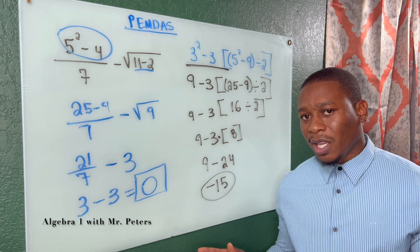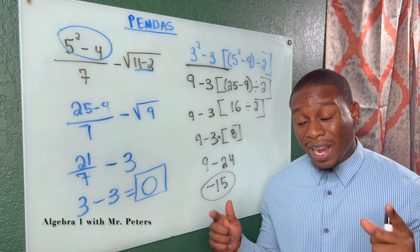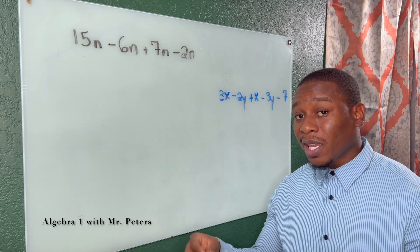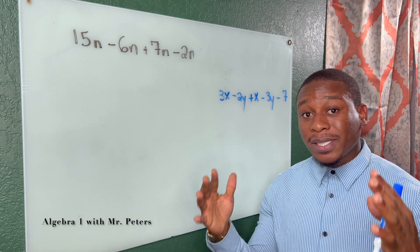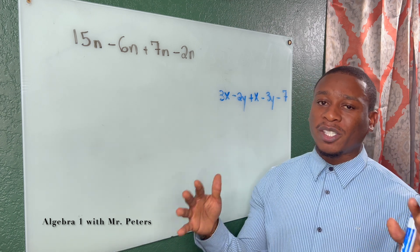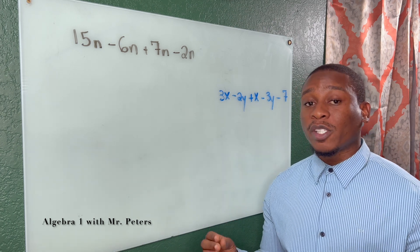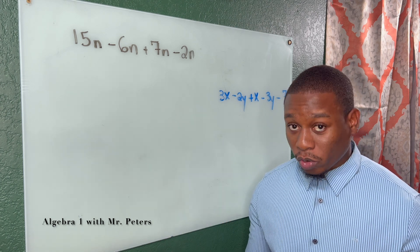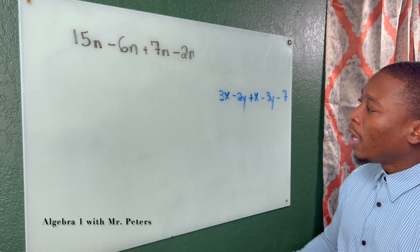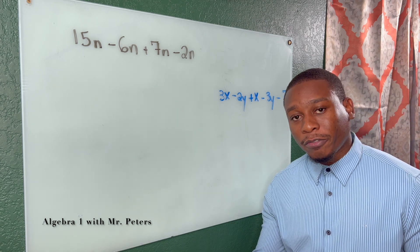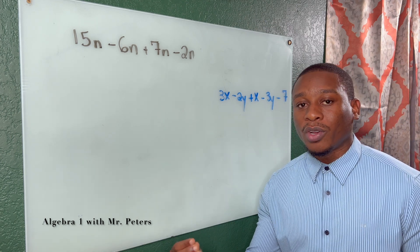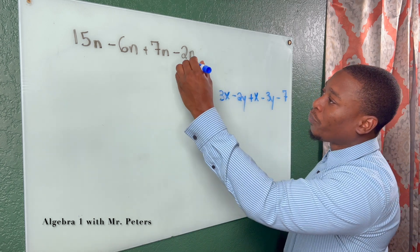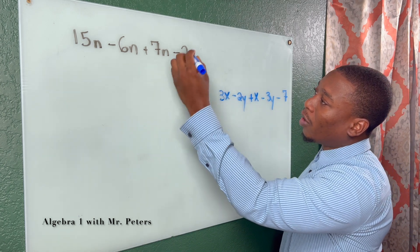Moving on to the second concept: we're now going to focus on how to simplify expressions. When we simplify expressions, we have to understand that expressions do not have equal signs. Also, when simplifying expressions, order of operations apply. But before we get there, let's talk about like terms.